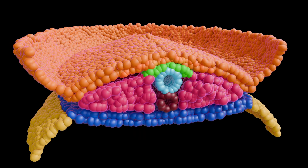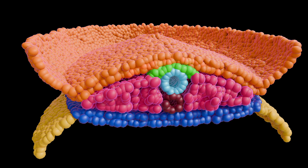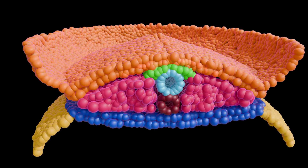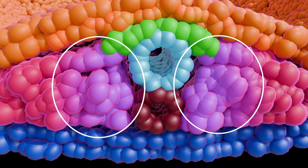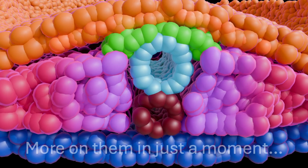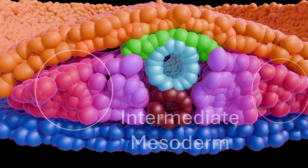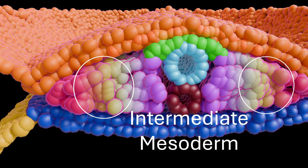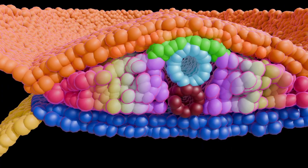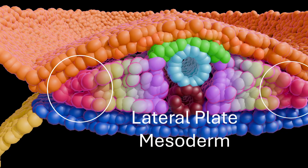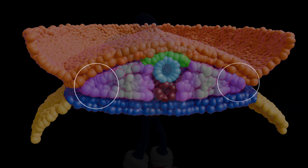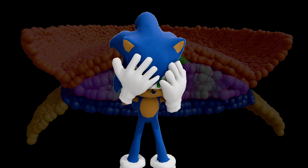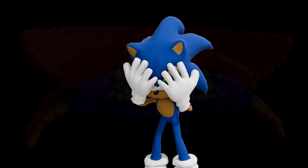Meanwhile, the mesoderm cells are also branching into their own distinct regions. Closest to the notochord lies the paraxial mesoderm — paraxial, right along the axis — and it'll segment into somites. Just beyond it, the intermediate mesoderm gives rise to parts of the urogenital system, and at the far edges, the lateral plate mesoderm spreads to help form the heart, limbs, and body wall. Don't worry too much about memorizing these right now, since we'll double back over many of these processes in subsequent videos.